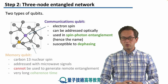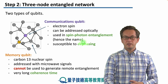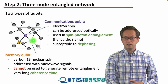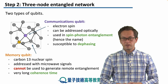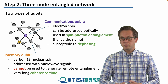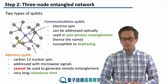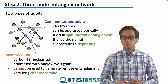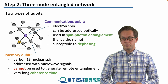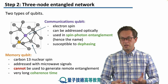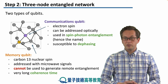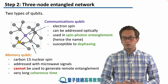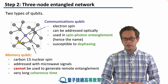The memory qubit, on the other hand, is represented by the gray circles, which are carbon-13 nuclear spins. These are not addressed optically, but using microwave signals, and they cannot be used to generate remote entanglement — hence the name memory qubit. On the other hand, they have extremely long coherence times, so they're very good for storing quantum states.